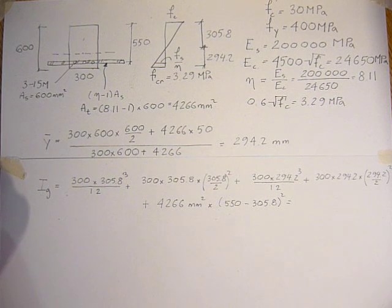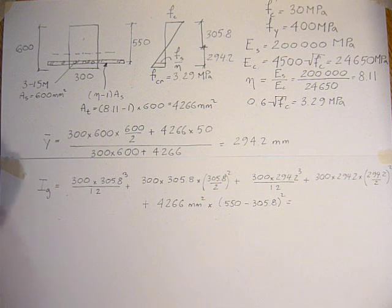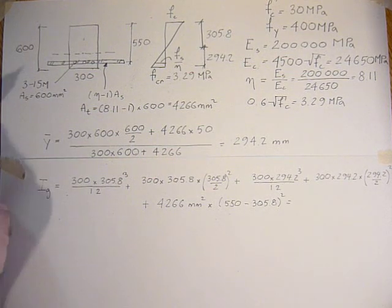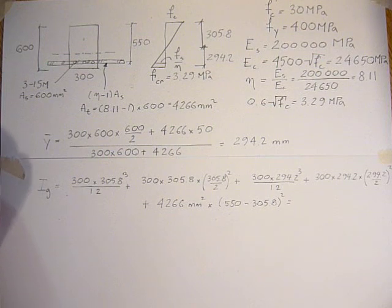plus 300 times 294.2 cubed divided by 12, plus 300 times 294.2 times 294.2 over 2 squared,